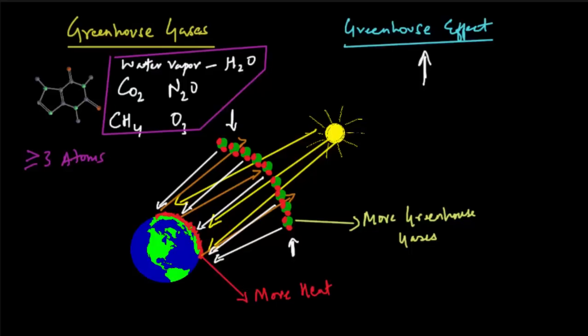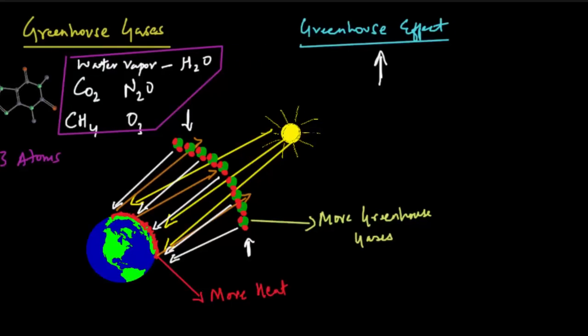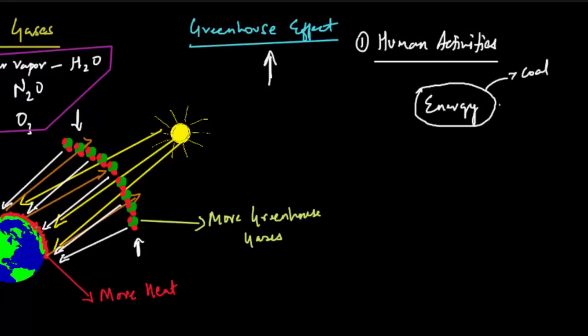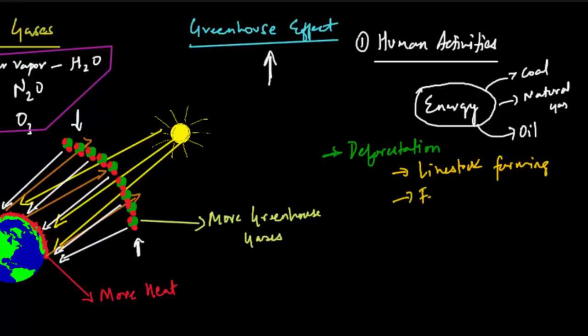Now there are two ways that a greenhouse gas can enter our atmosphere. One of them is through human activities. The main human activities that I'm talking about are burning of fossil fuel, deforestation, intensive livestock farming, usage of fertilizers, and industrial processes.